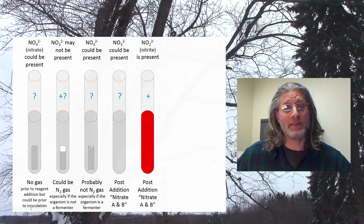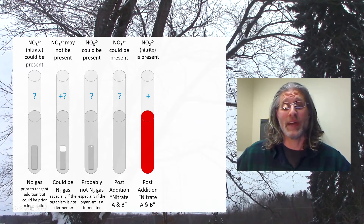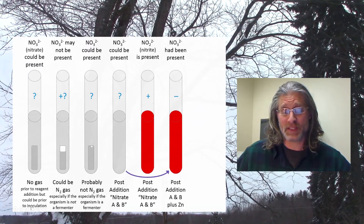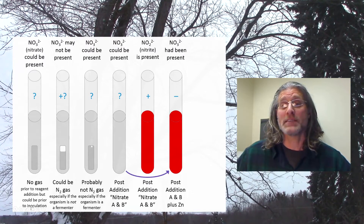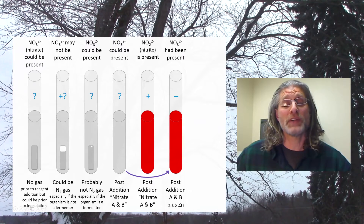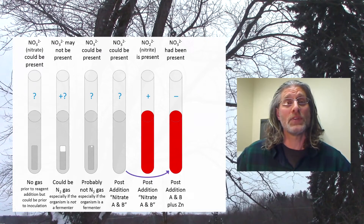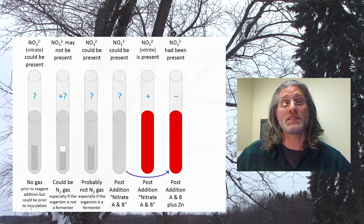Alternatively, if you have a tube that is not red in color following the addition of these reagents, you can still add the catalyst zinc. Zinc converts nitrate to nitrite. If you have a tube that contains nitrate and you add zinc, and then the tube turns red due to the presence of reagents A and B, then you have an indication that you did not have nitrate reduction — that, in fact, you had nitrate in the tube. Zinc converted the nitrate to nitrite, and now you have a red color reaction due to the presence of nitrite. But nitrite is now present not because of the action of the organism, but instead due to the action of zinc. Therefore, this is a nitrate reduction negative result; the organism did not reduce nitrate.